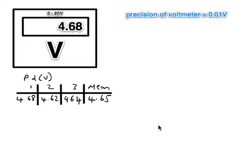Now, take a look at what we've got on the screen. We've got a voltmeter that is measuring a range of 0 to 20 volts and is measuring a value of 4.68 volts. Now, we know from that that the precision of the voltmeter is 0.01 volts. And the reason we know that is because the smallest measurement that this voltmeter can take is given to us by the precision there. The smallest measurement would be 0.01 volts. So that is the precision of the voltmeter.